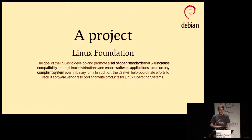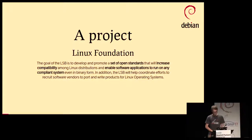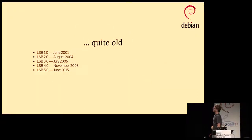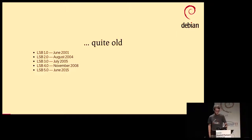I thought it would be interesting to look at what the Linux Foundation actually said about the LSB. The goal of the LSB is to develop and promote a set of open standards that will increase compatibility among Linux distributions and enable software applications to run on any compliant system, even in binary form. It's actually quite an old project — the first version was published in June 2001, and the last version was released two years ago in June 2015.